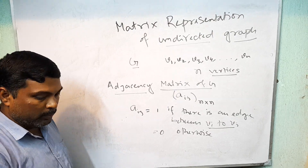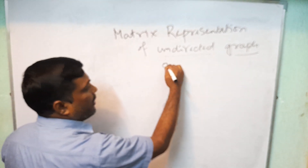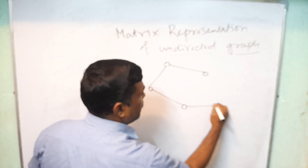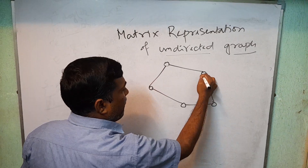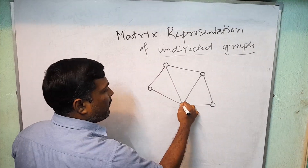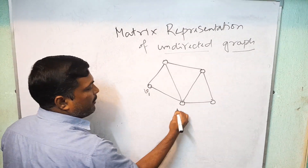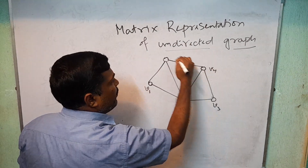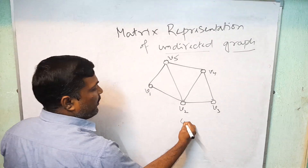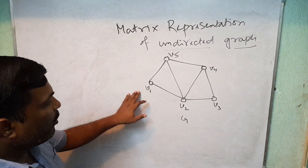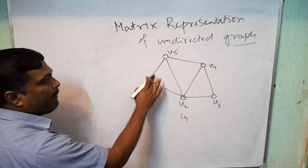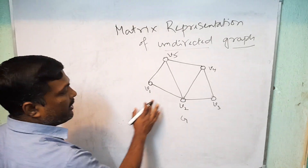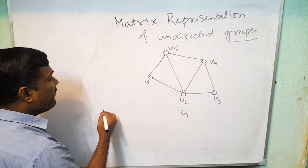See one example. Suppose this is the graph with vertices V1, V2, V3, V4, V5. This graph has 5 vertices. So the corresponding adjacency matrix is a square matrix of order 5. What are the elements?